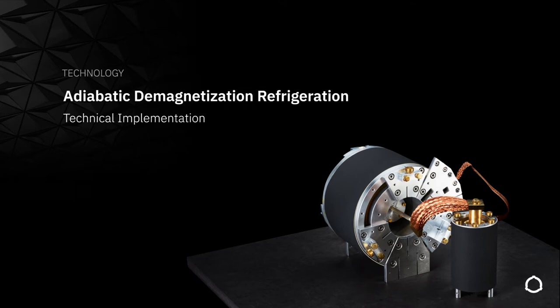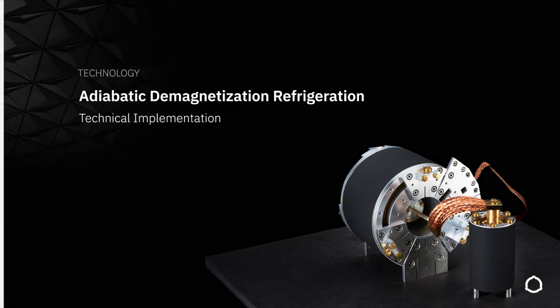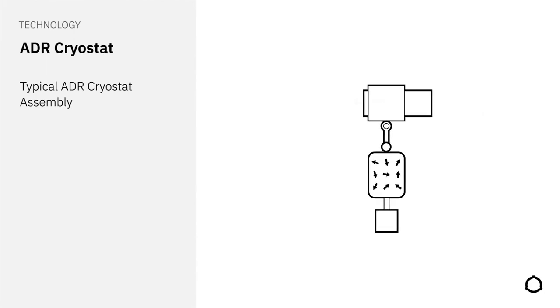Now, let's have a look at how ADR is technically implemented to build a sub-Kelvin refrigerator. In a cryogen-free setup, we use a closed-cycle cryocooler to provide a main thermal bath of about 4 Kelvin. It will be used to pre-cool our ADR cooling medium to a temperature where the total entropy of the material is dominated by the magnetic entropy. The cooling medium is connected to the cryocooler through a heat switch on one end and to the sample stage that contains the experimental setup on the other end. Finally, the medium is surrounded by a superconducting magnet.